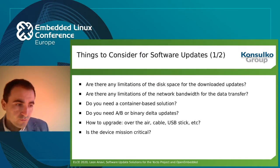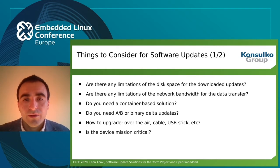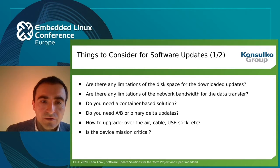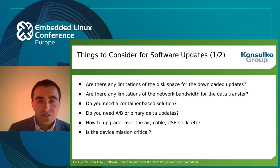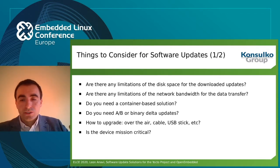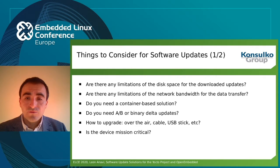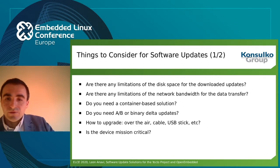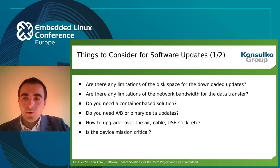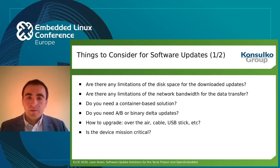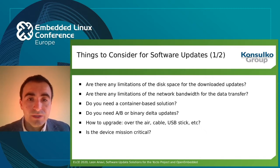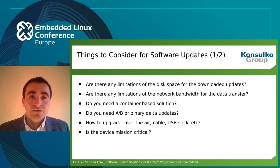Now let's talk about software updates over the air or over an internet cable — there are so many things to consider. Are there any limitations of disk space for the downloaded update? Can you afford two identical partitions or are you constrained on disk space? Are there any limitations of network bandwidth? For example, a set-top box connected with ethernet isn't a concern, but updating a wearable device or a vehicle using cellular data is a different story.